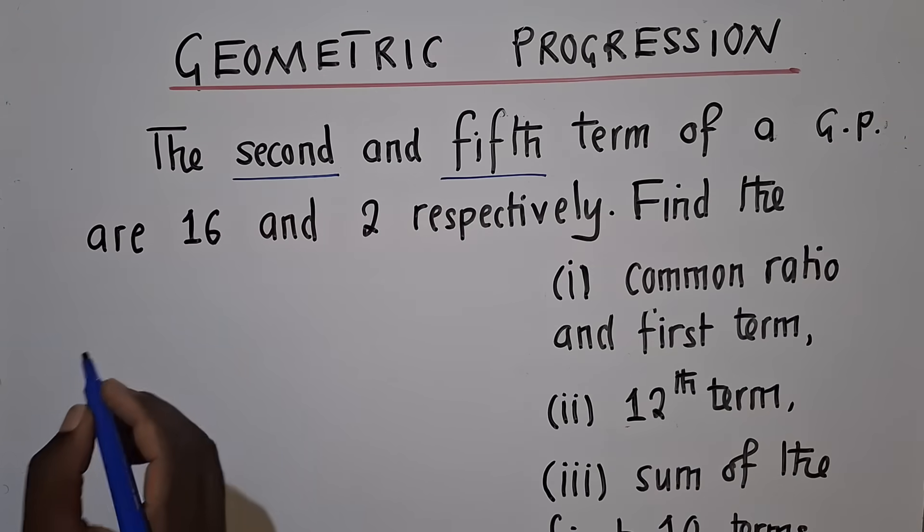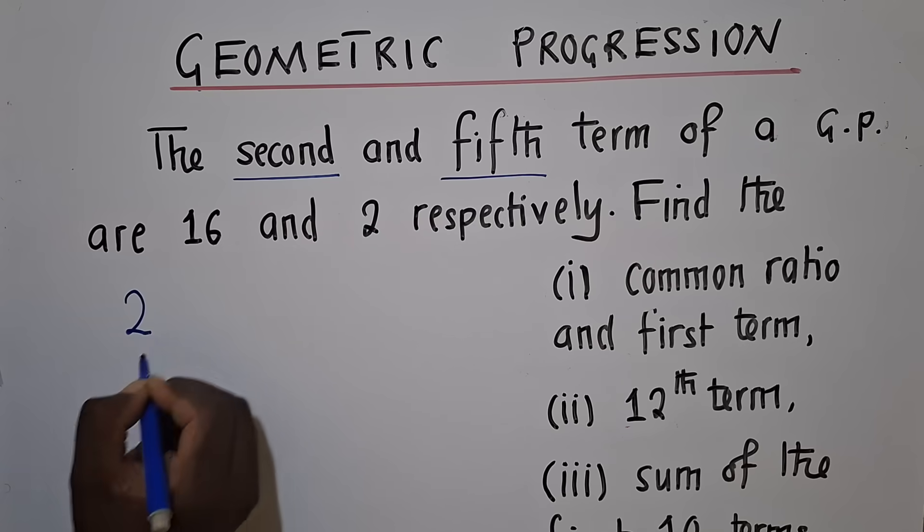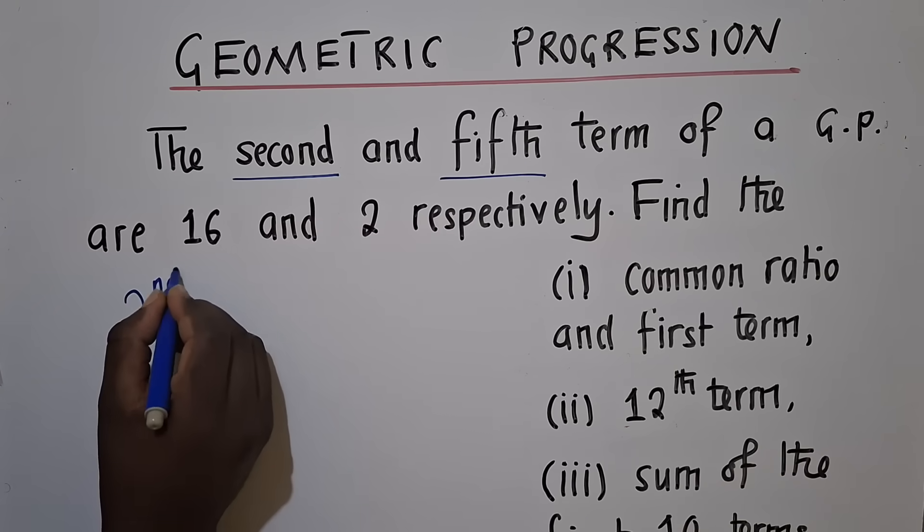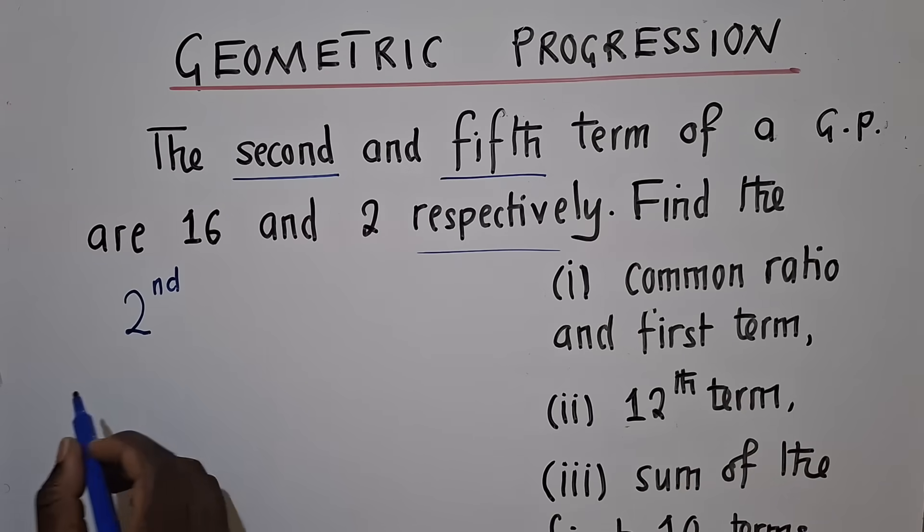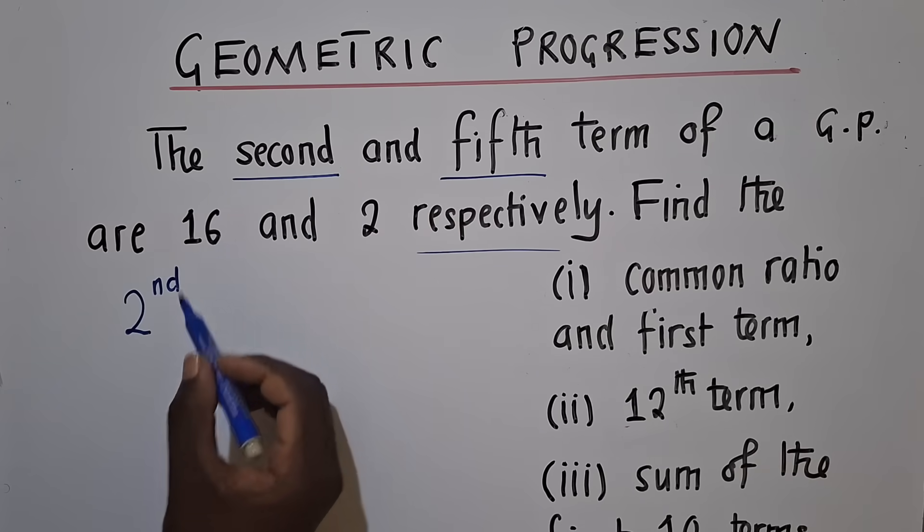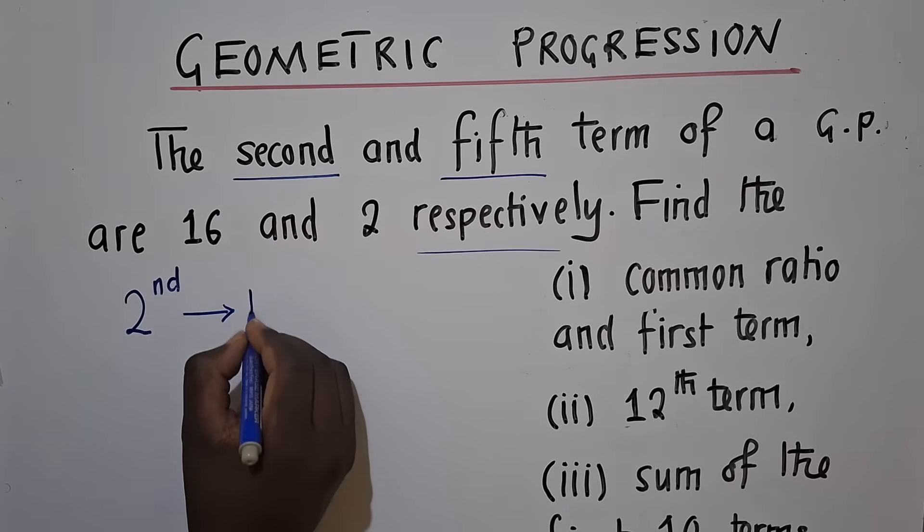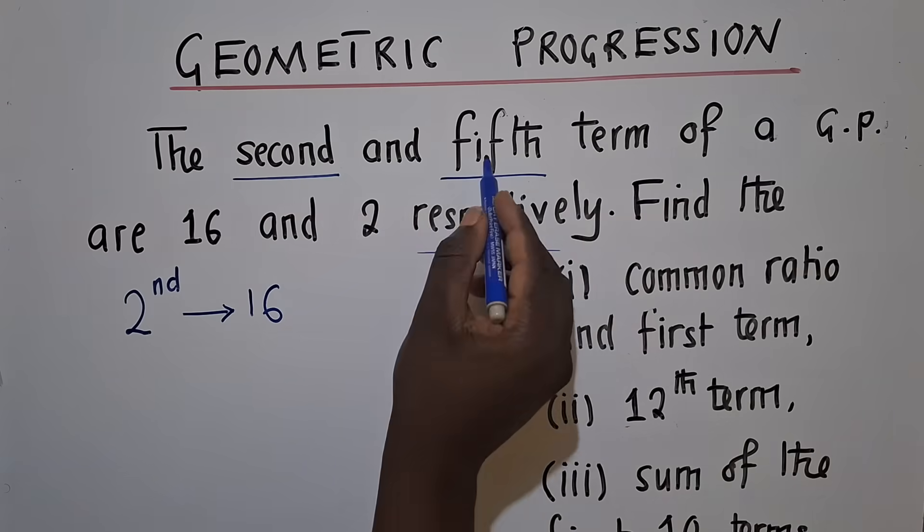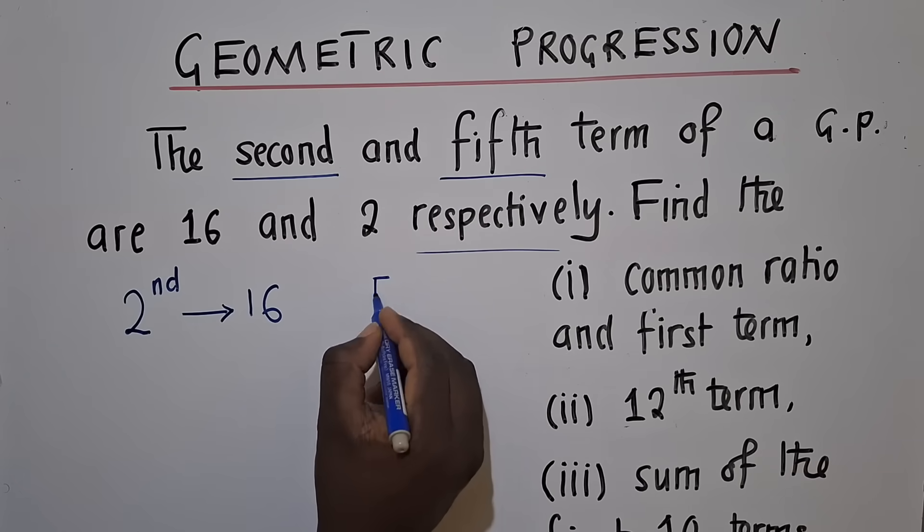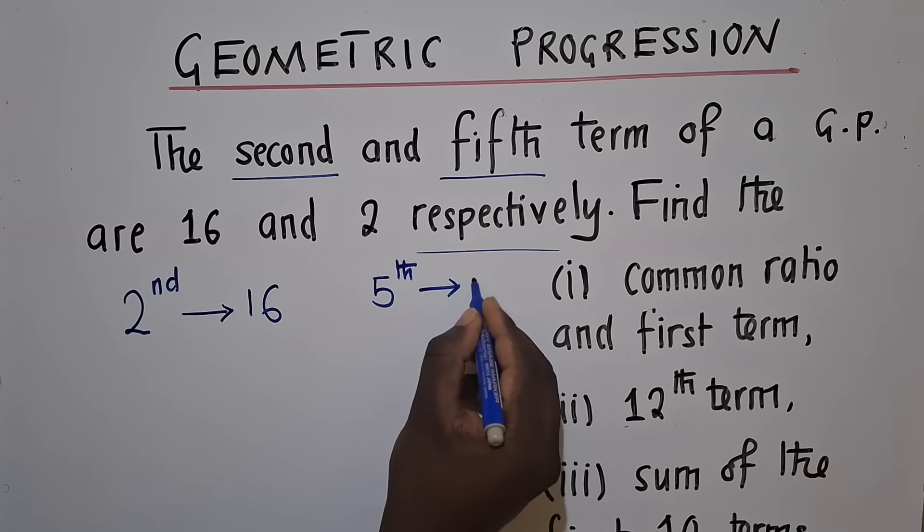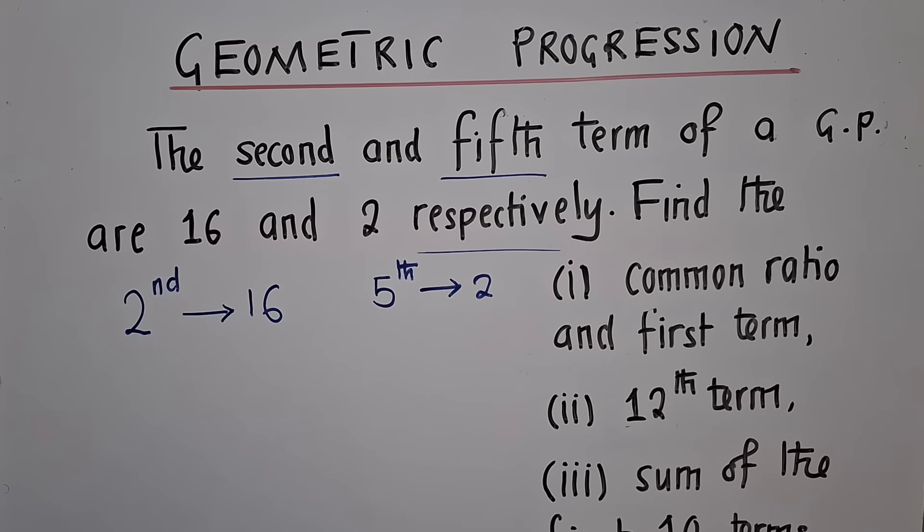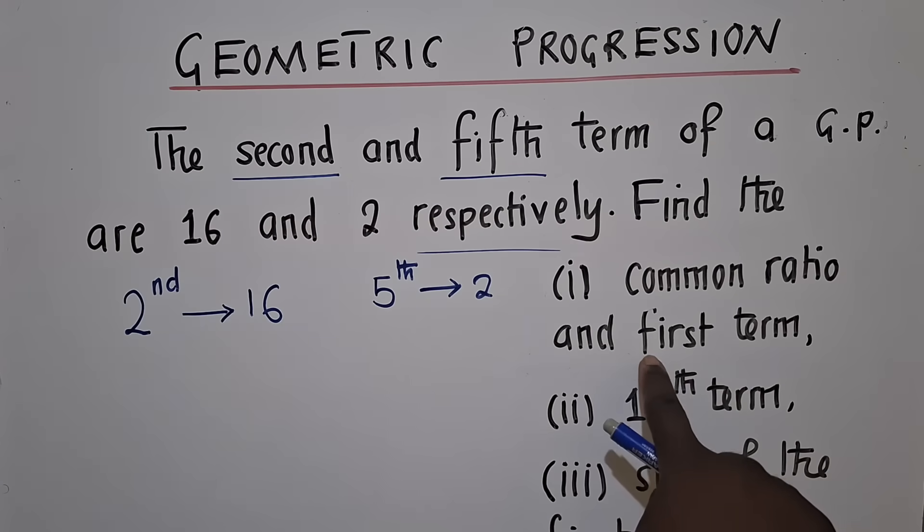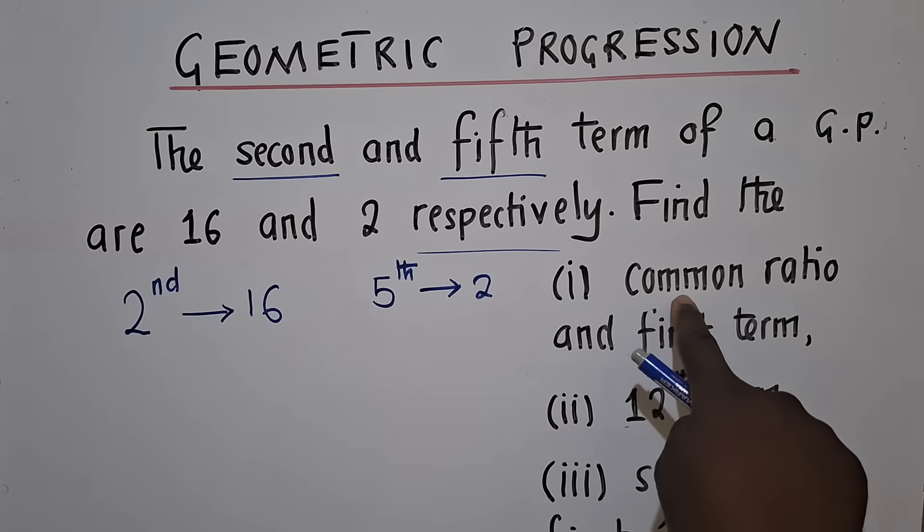So when we talk about the second term, it's simply a2. This is second. Since they have said respectively, it means second will move with 16. Fifth will move with 2. So we've gathered our data right over here. After getting this data,